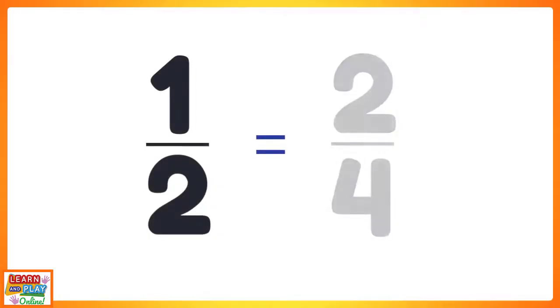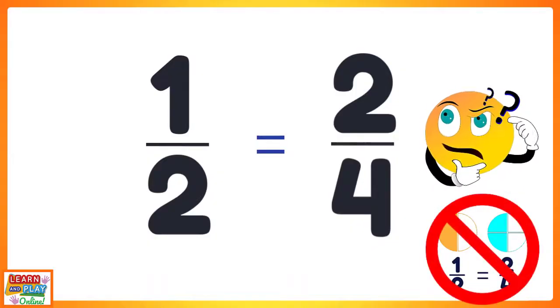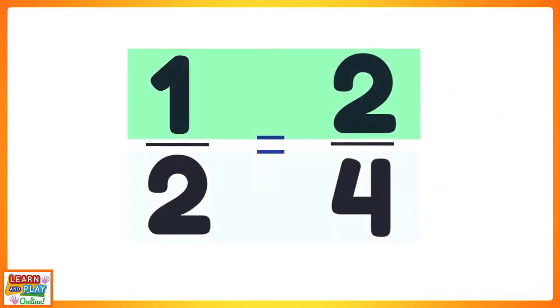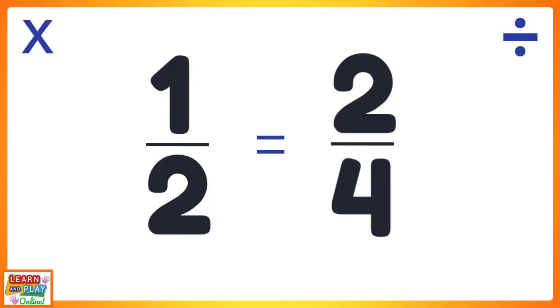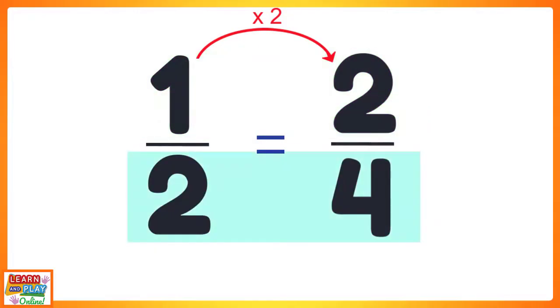Let's have a look at some examples so you can have a better understanding. We already know that one half is equivalent to two quarters. But how can we find equivalent fractions without needing to draw pictures? We need to look at the relationship between the numerators and the denominators, and we only use the mathematical operations of multiplication or division. For the numerators, to get from the number one to the number two, we have to multiply one by two. And remember the golden rule: what you do to the top, you must do the same to the bottom. So two times two would give you four.